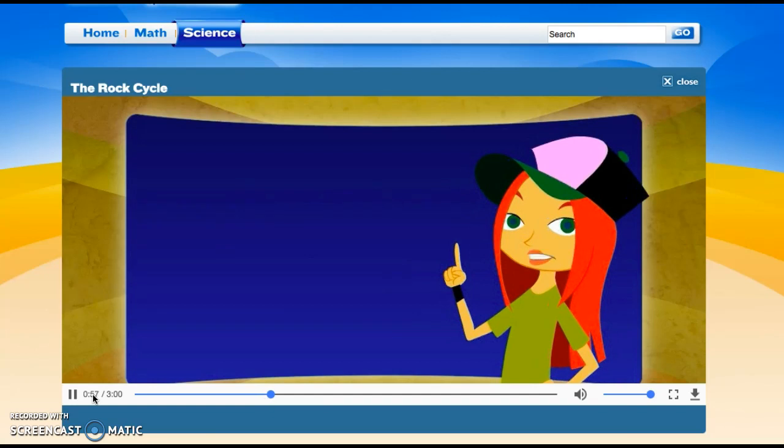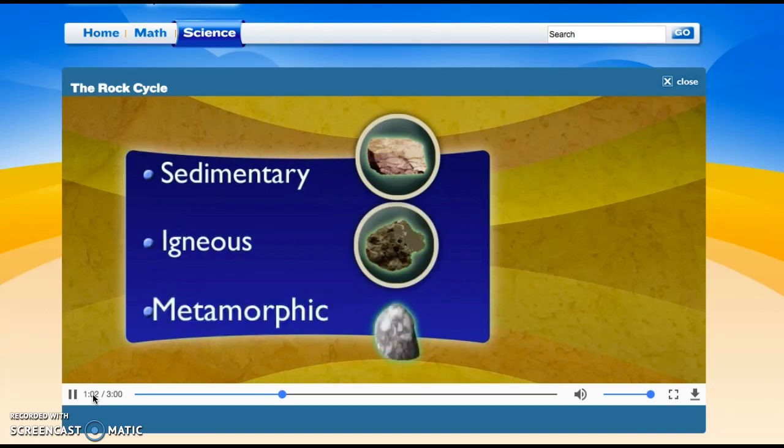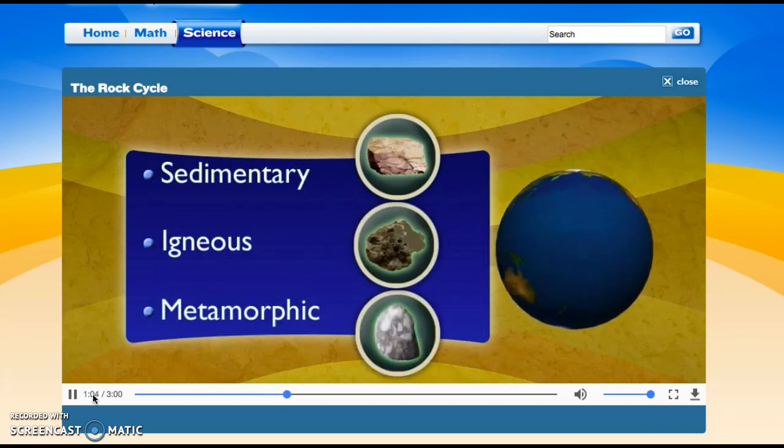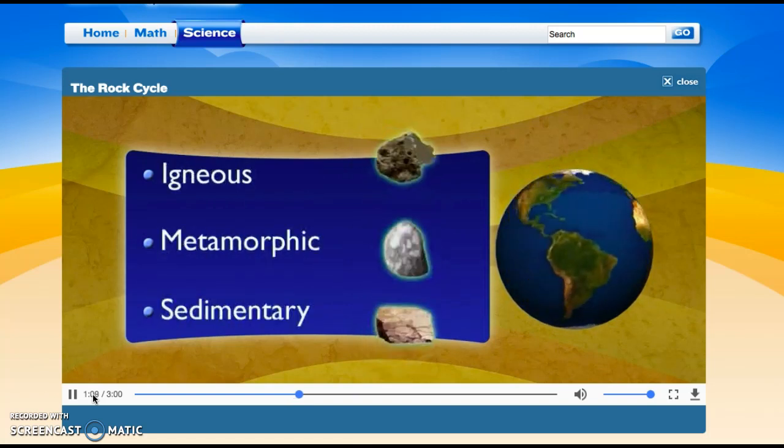Okay, different types of rock music I know about, but different types of rocks? Three actually: sedimentary, igneous, and metamorphic rocks. The whole Earth is made up of these three types of rocks, and they're constantly changing from one kind to another through the rock cycle.